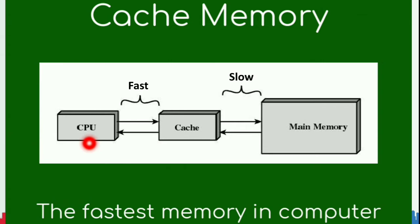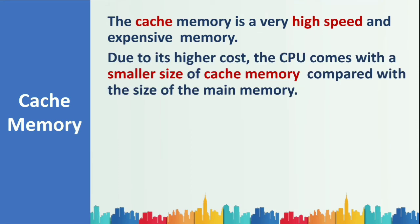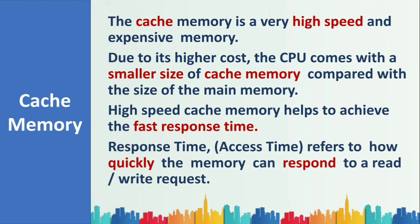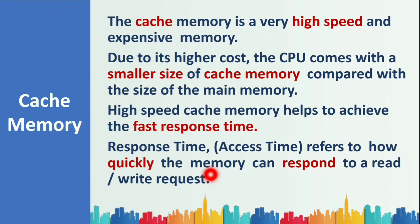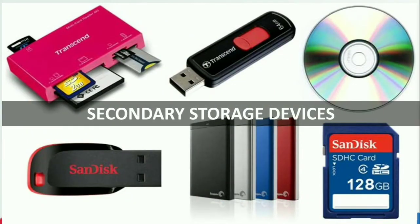Cache memory is the fastest memory in a computer because it is very close to the CPU, making data transfer very fast compared to main memory. Cache memory is very high-speed and therefore very expensive, which is why it comes in smaller size compared to main memory. It also helps achieve fast response time — that is, how quickly the memory can respond to a read or write request.